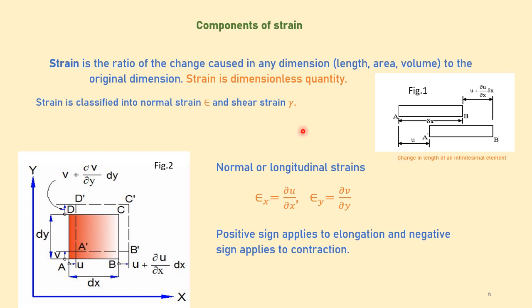Now let us understand what is strain and its components. Strain is defined as the ratio of change in any dimension to its original dimension — it may be a change in length, area, or volume. Remember, strain is a dimensionless quantity with no units. Just like stress, strain is also classified into normal strain, notated as epsilon, and shearing strain, notated as gamma.